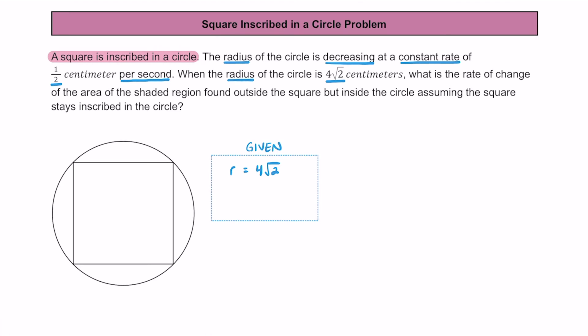We also know the rate at which the radius is decreasing. We call that dr/dt in relation to time. It's decreasing at a rate of half a centimeter per second, so dr/dt equals negative one half. This radius is 4√2 centimeters, decreasing at half a centimeter per second.